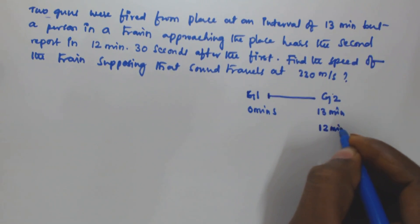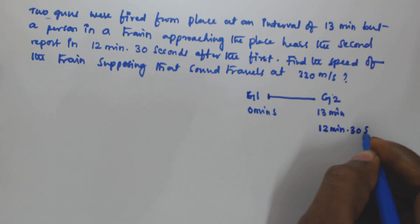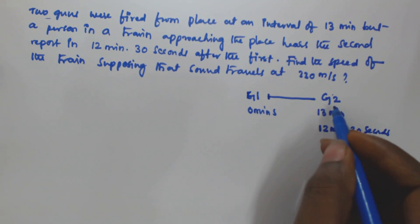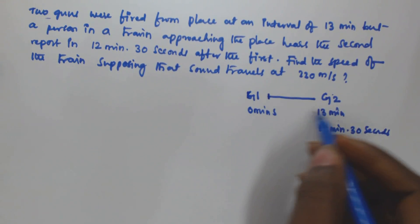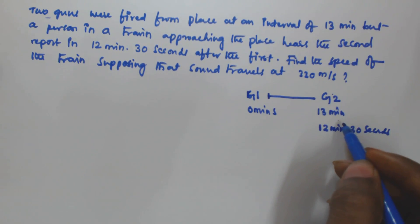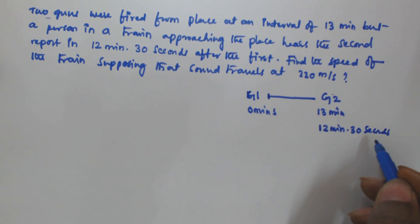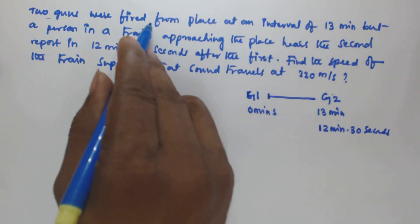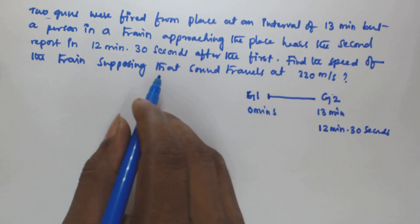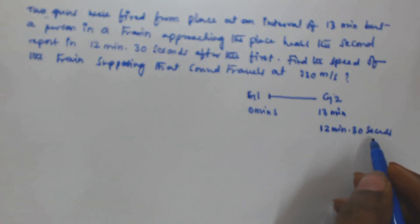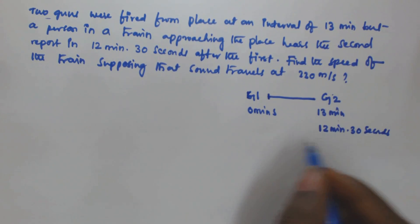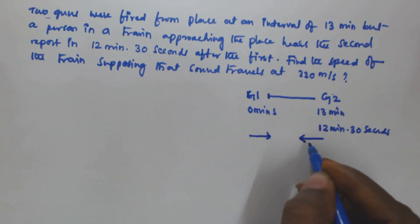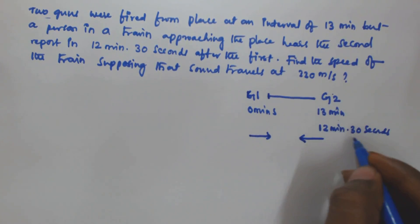The person heard the second gun after 12 minutes 30 seconds. The second gun is fired 13 minutes later, so normally he should hear it after 13 minutes, but he heard it after only 12 minutes 30 seconds. This is because the train is actually approaching the place from where the gun is fired. The sound is moving in one direction and the train is approaching in the opposite direction, which accounts for the 30-second difference.